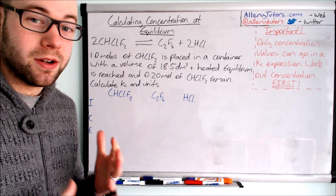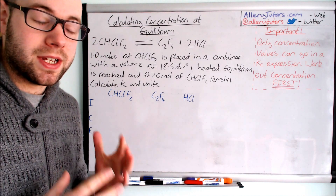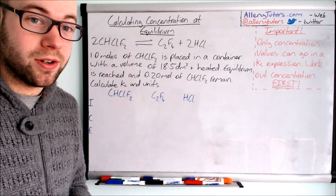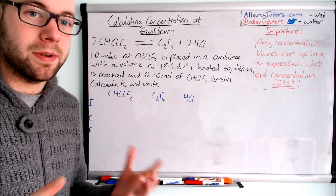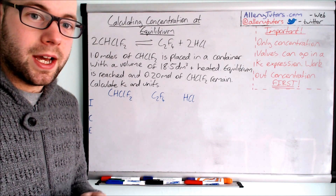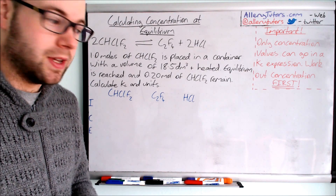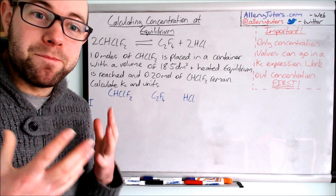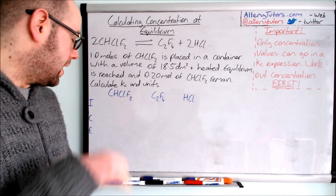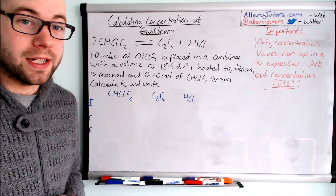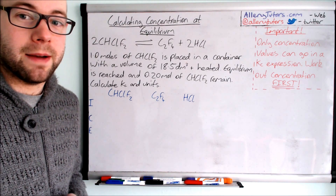This video goes through a question which is slightly more difficult in that they haven't given you any concentrations to work out Kc directly. Sometimes they will give you a table of concentrations at equilibrium and you just swap those into the Kc expression and work out the value of Kc. But in this example we have to draw our own table using an acronym called ICE, which I'll show you is really useful and can get you so many marks in the exam.